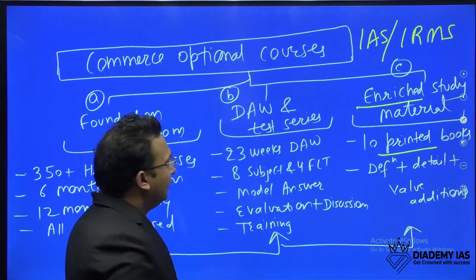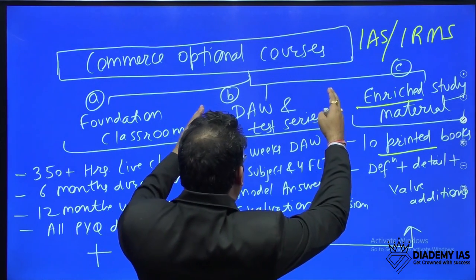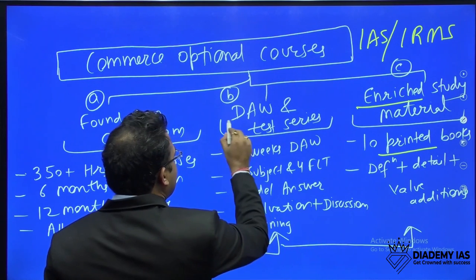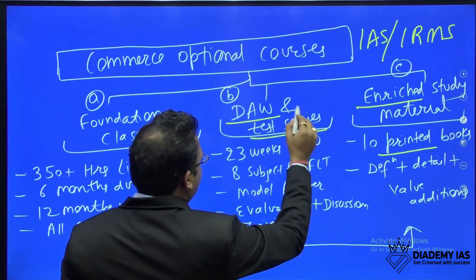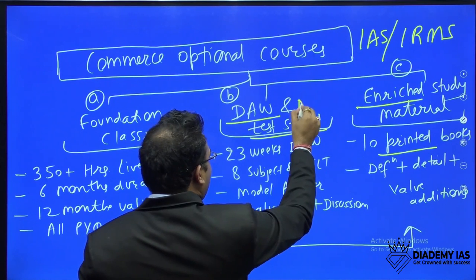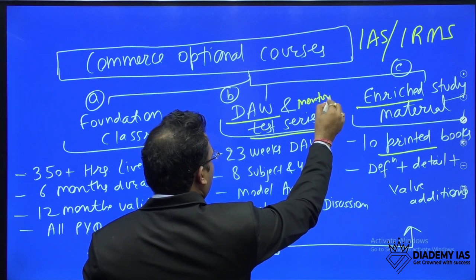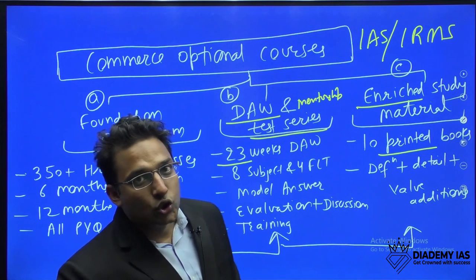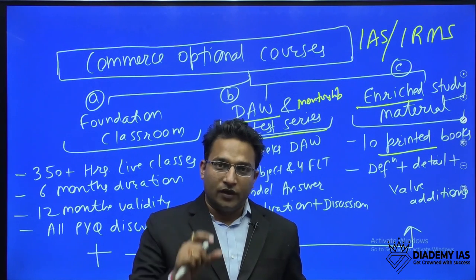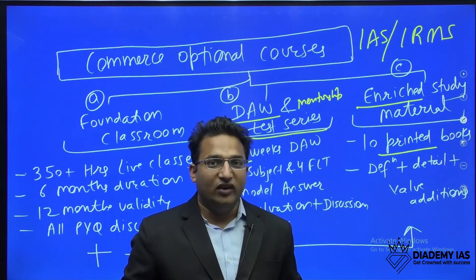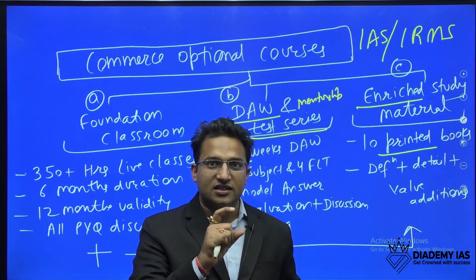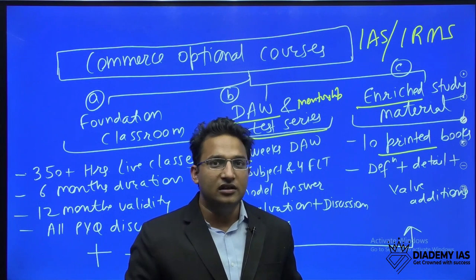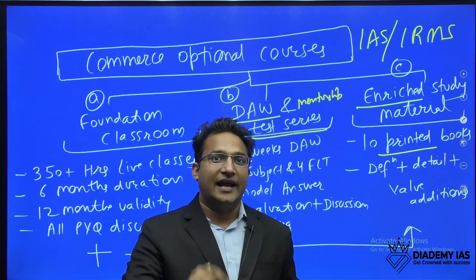Second comes the test practice part. This is Daily Answer Writing (DAW) and the test series. This also includes mentorship. In this course, you will get 23 weeks of daily answer writing. In this, you will get Paper 1 and Paper 2 separate weekly schedule. Every week, there will be five days of answer writing, two questions daily.